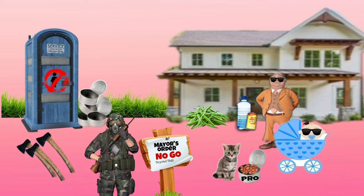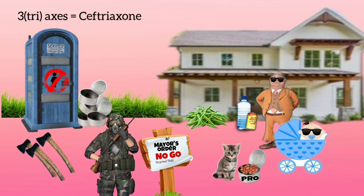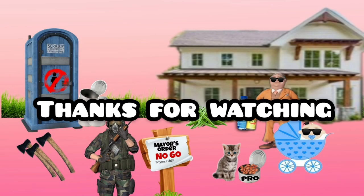The mayor is an important person, so a person from the army is always on duty and goes anywhere the mayor goes. From the word 'army,' remember that AIMS is the transport media used for gonococci. You can also see three axes, which symbolize ceftriaxone — a third-generation cephalosporin and the drug of choice for treatment of gonococci.